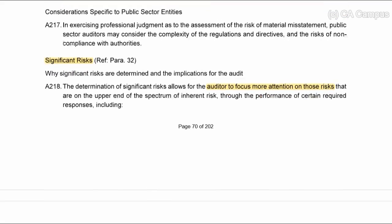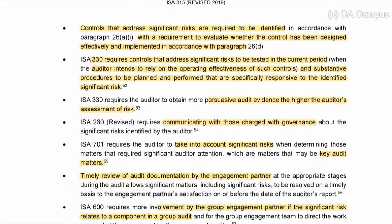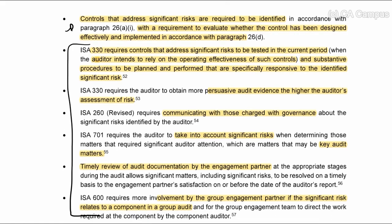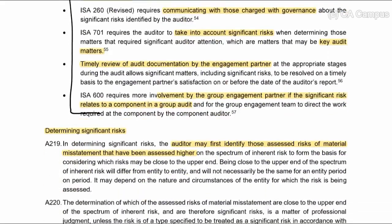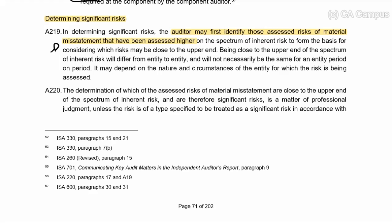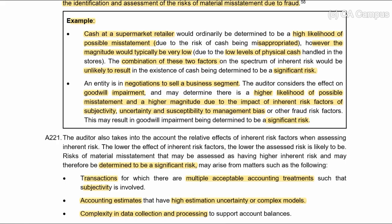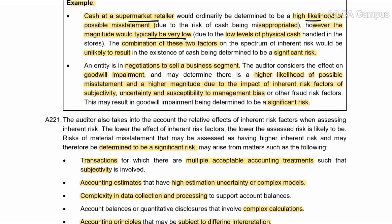When it comes to significant risks, these are where the auditor needs to pay more attention and look at controls in place to address them. Determining significant risks: they are assessed as higher on the spectrum — both magnitude and likelihood are considered higher. For example, a cash supermarket retailer — you'd think there's a high likelihood of cash being stolen, but it's a low magnitude because they keep low levels of cash, so we wouldn't consider this significant since both factors are not high. However, goodwill impairment — likelihood would be high, magnitude would be high, so it would be a significant risk.